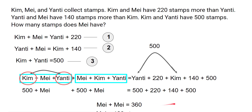May has 360 divided by 2, which is 180 stamps. This problem may sound complex when you first read it, but if you break it down and write out the steps, it becomes much clearer how to approach and solve it.